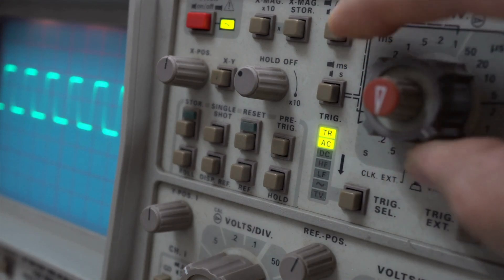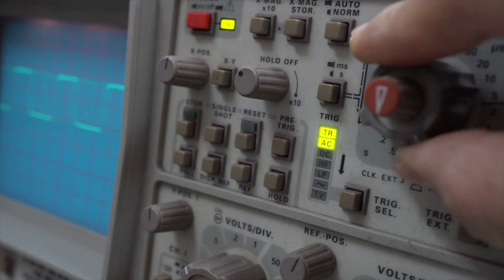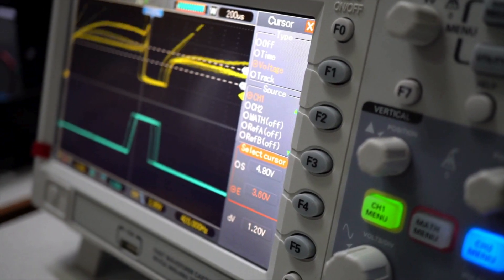Some of the key features to think about when choosing an oscilloscope include bandwidth, which determines the range of frequency the oscilloscope can accurately measure, and sample rate, the number of samples per second the oscilloscope can capture.